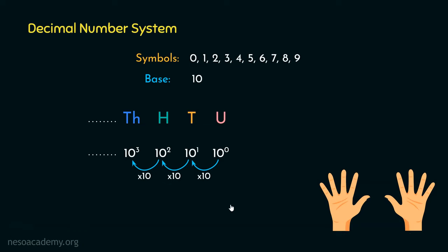Now let's move a few notches back in our memory. When we were introduced to the number system chapter, we came to know about the decimal number system, where the symbols are 0 to 9 — that is 10 symbols — which was the reason for the base being 10. Since the base is 10, the place values are units place, tenths place, hundredths place, thousandths place, and so on. The units place has place value 10 raised to the power 0, tenths place has 10 to the power 1, hundredths place has 10 squared, thousandths place has 10 cubed, and so on.